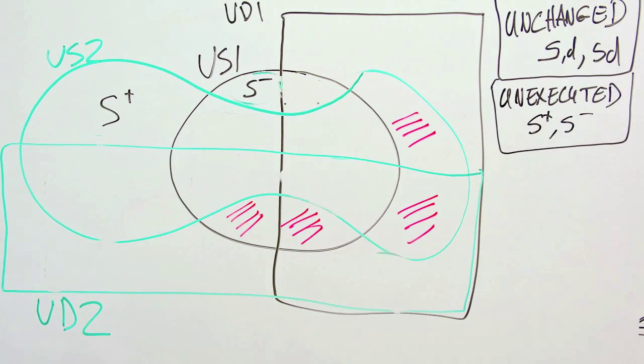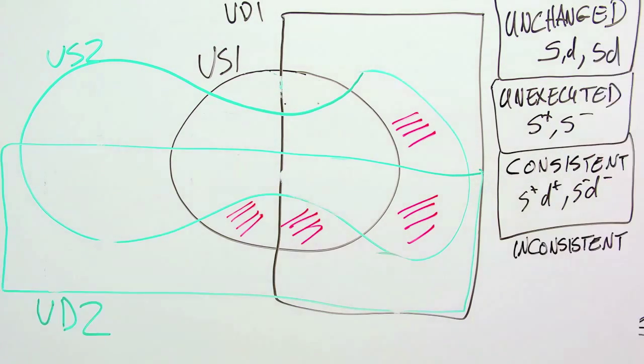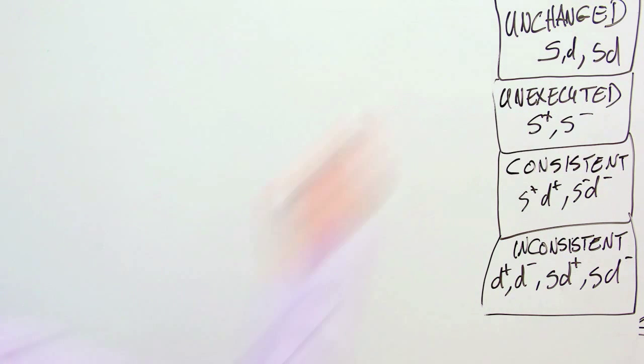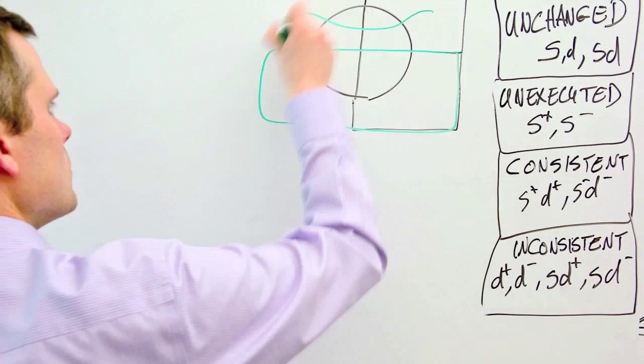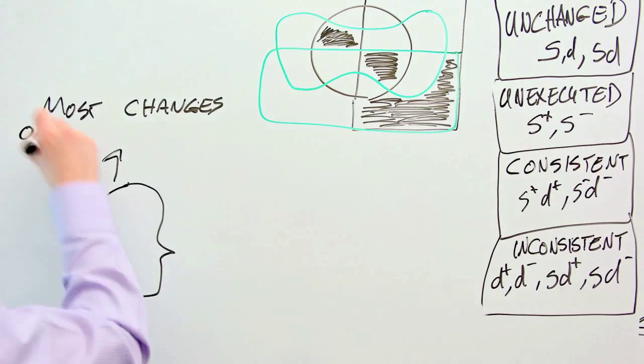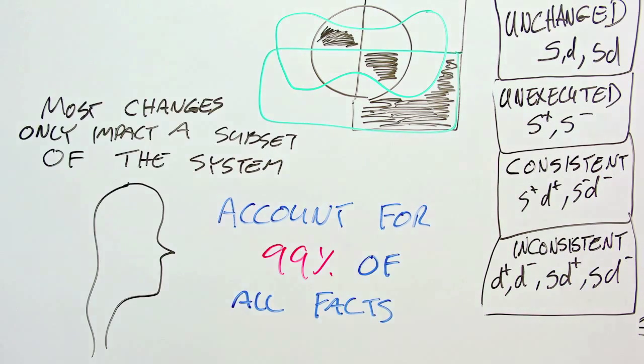These are unchanged, not executed, consistent, and inconsistent. The three unchanged partitions correspond to calling relationships that were not modified between the two program versions. For any given change, we would expect these three partitions to contain the majority of the call graph elements, and in practice we find that over 99% of elements fall into these partitions.